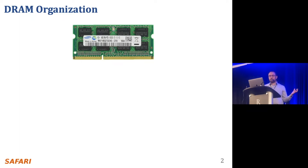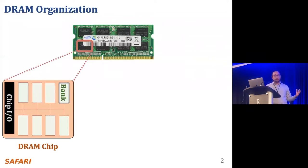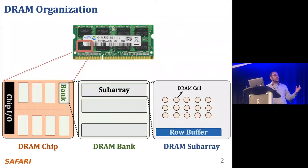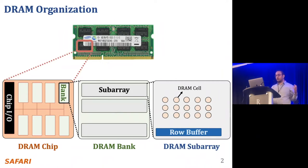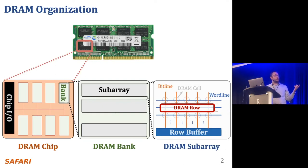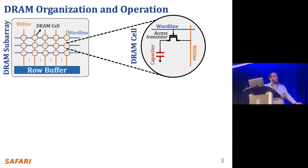This is a DRAM module used as the main memory in many computing systems today. A DRAM module consists of multiple chips, and within each chip we have multiple banks. Each bank has multiple sub-arrays, and within each sub-array we have DRAM cells, each containing one bit of data organized as a two-dimensional array, accessed in DRAM-row granularity. DRAM rows are enabled using wordlines, and the DRAM cells are connected to the row buffer via bit lines. This is a simplified diagram of a DRAM cell where data is stored as a capacitor voltage and accessed through the access transistor.